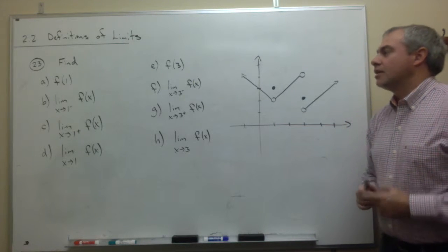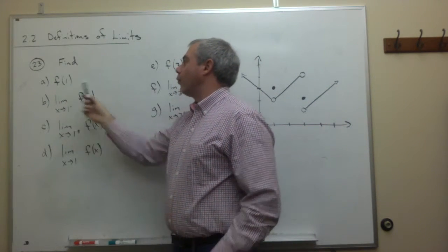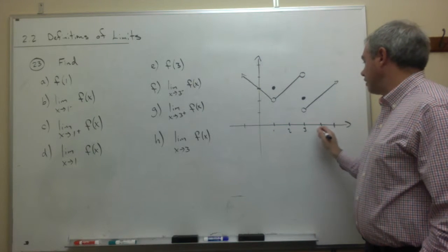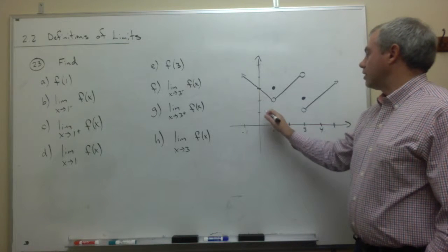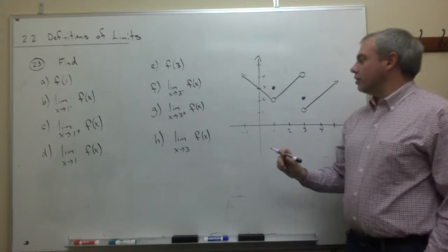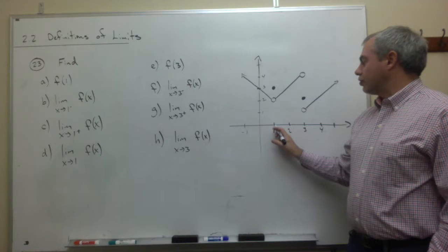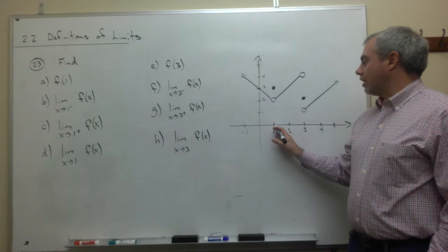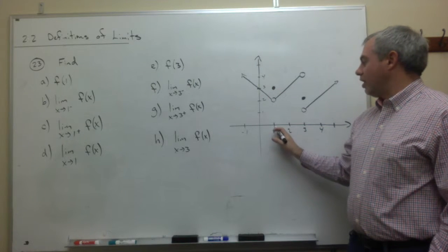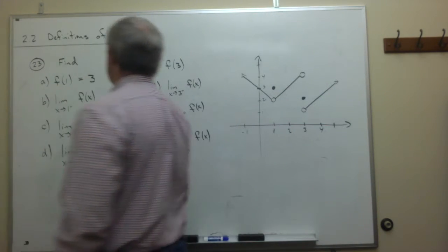The first thing the problem asks us to find is f(1). Let me label this real quick: we've got 1, 2, 3, 4 here and minus 1, then 1, 2, 3, 4 on the other axis. If we're looking at f(1), we're looking at the functional value directly above or below 1. I look above 1 — there's an open hole — and the point above 1 is at 3, so f(1) is 3.